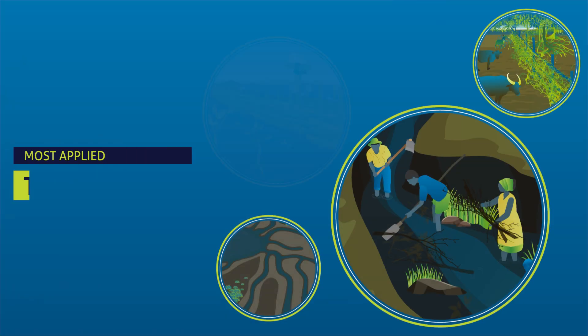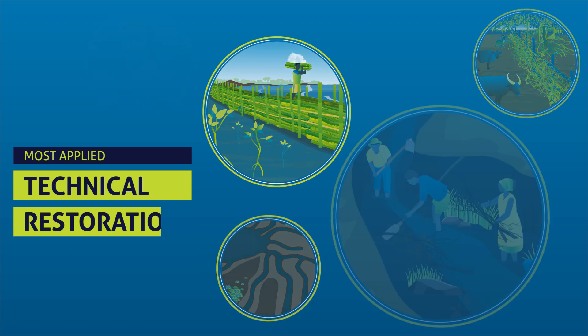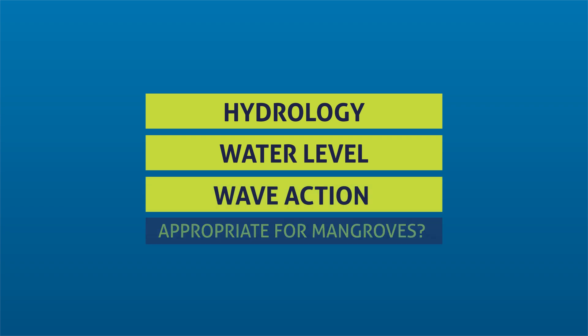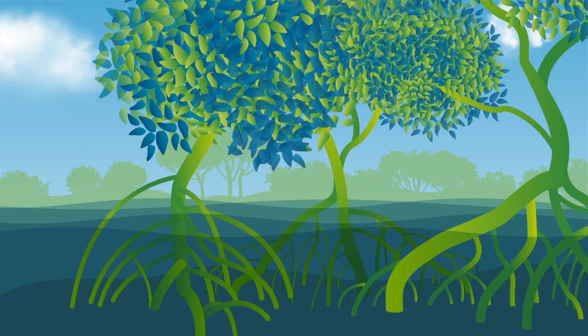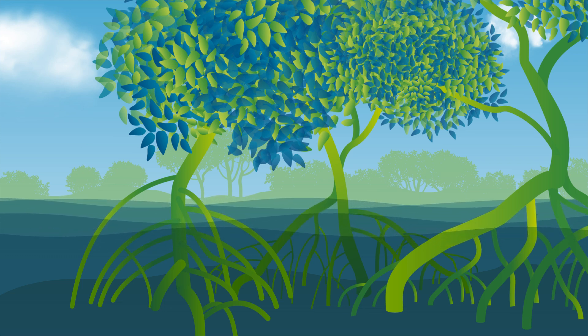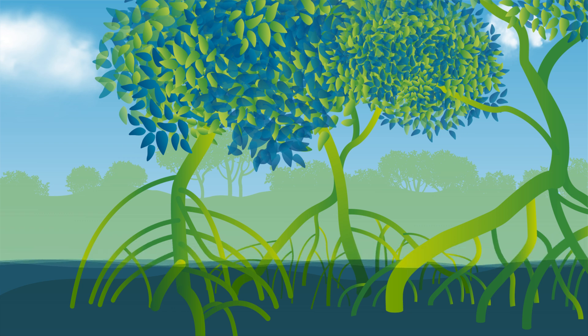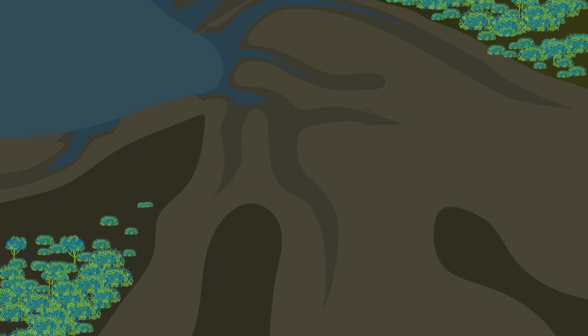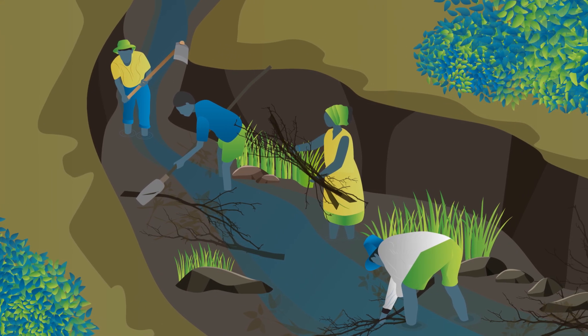Now let's dive into some of the most applied technical restoration activities. To allow mangroves to grow back naturally, are the hydrology, water level, and wave action appropriate for mangroves? Mangroves thrive when submerged just the right amount of time and appropriately flushed by tidal or freshwater flows, ensuring the right salinity levels. To create the right hydrological conditions, you may need to correct the water flow, drainage, or land features of your site.